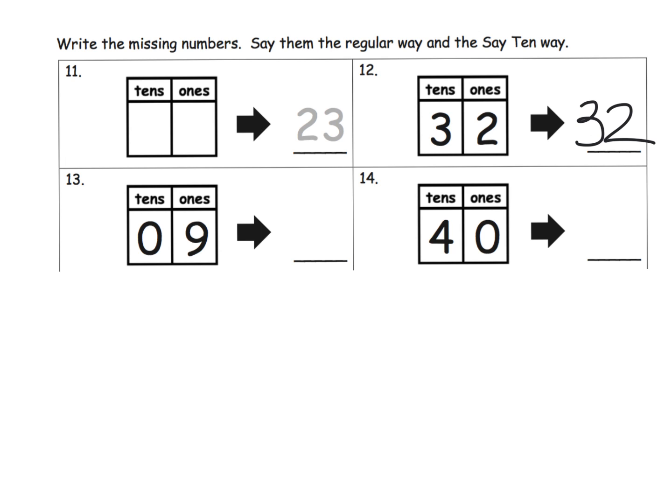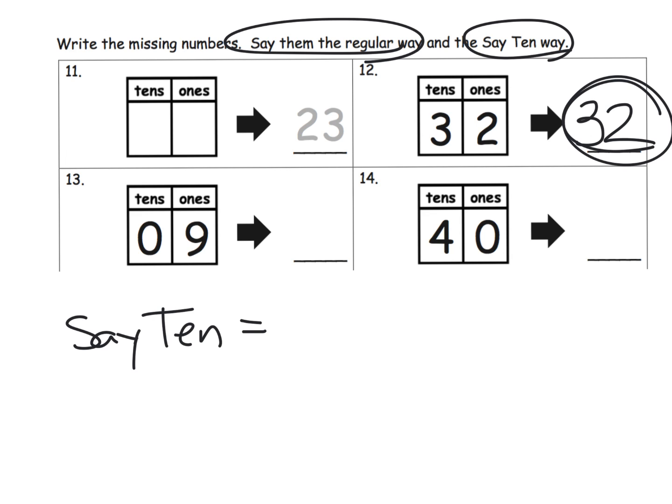How would we say that the regular way? The regular way is 32. What is the say 10? The say 10 method, and this is particularly for parents at home who don't have the teacher's edition, is we would say three tens, two ones. We're just making explicit the digits in that two-digit number.